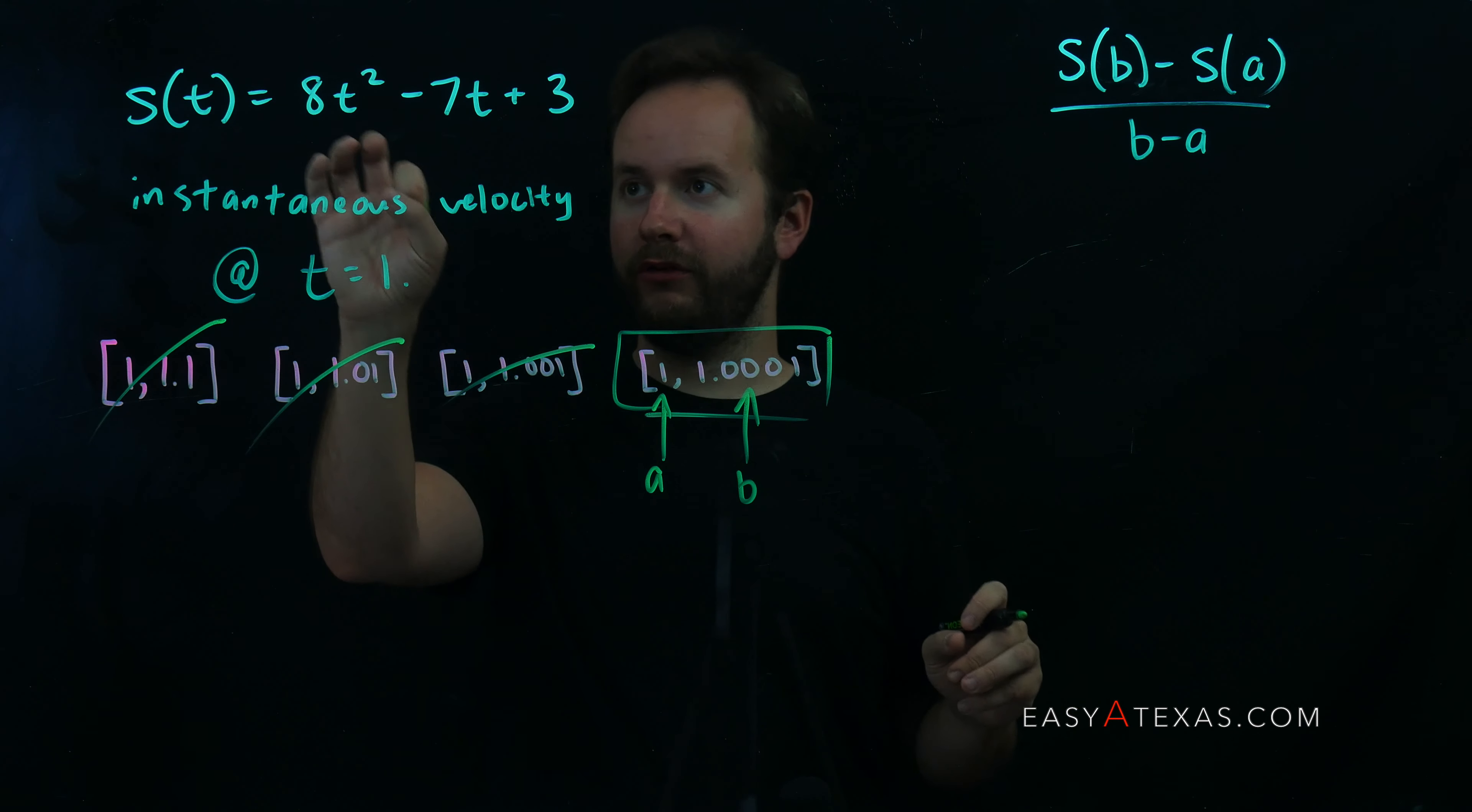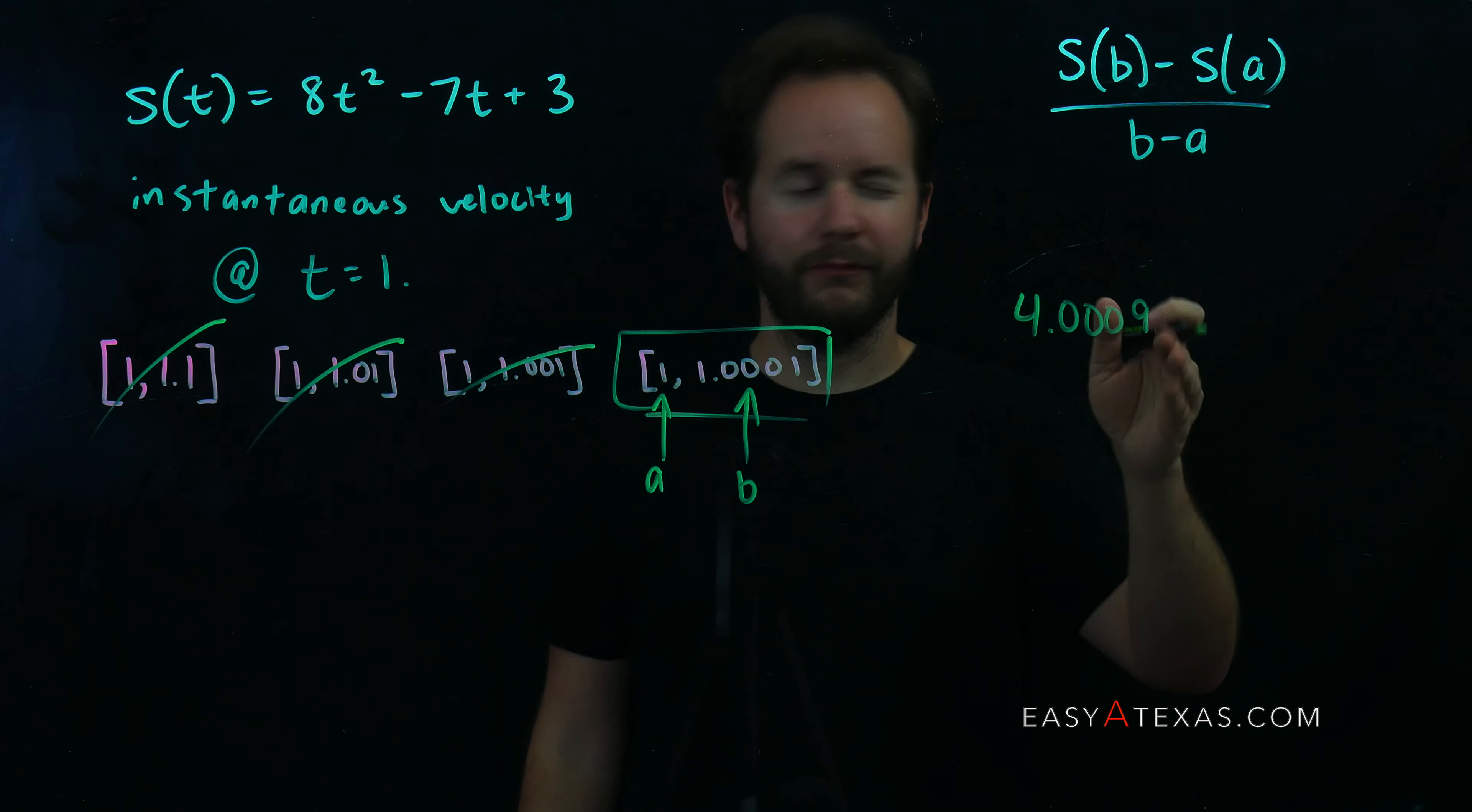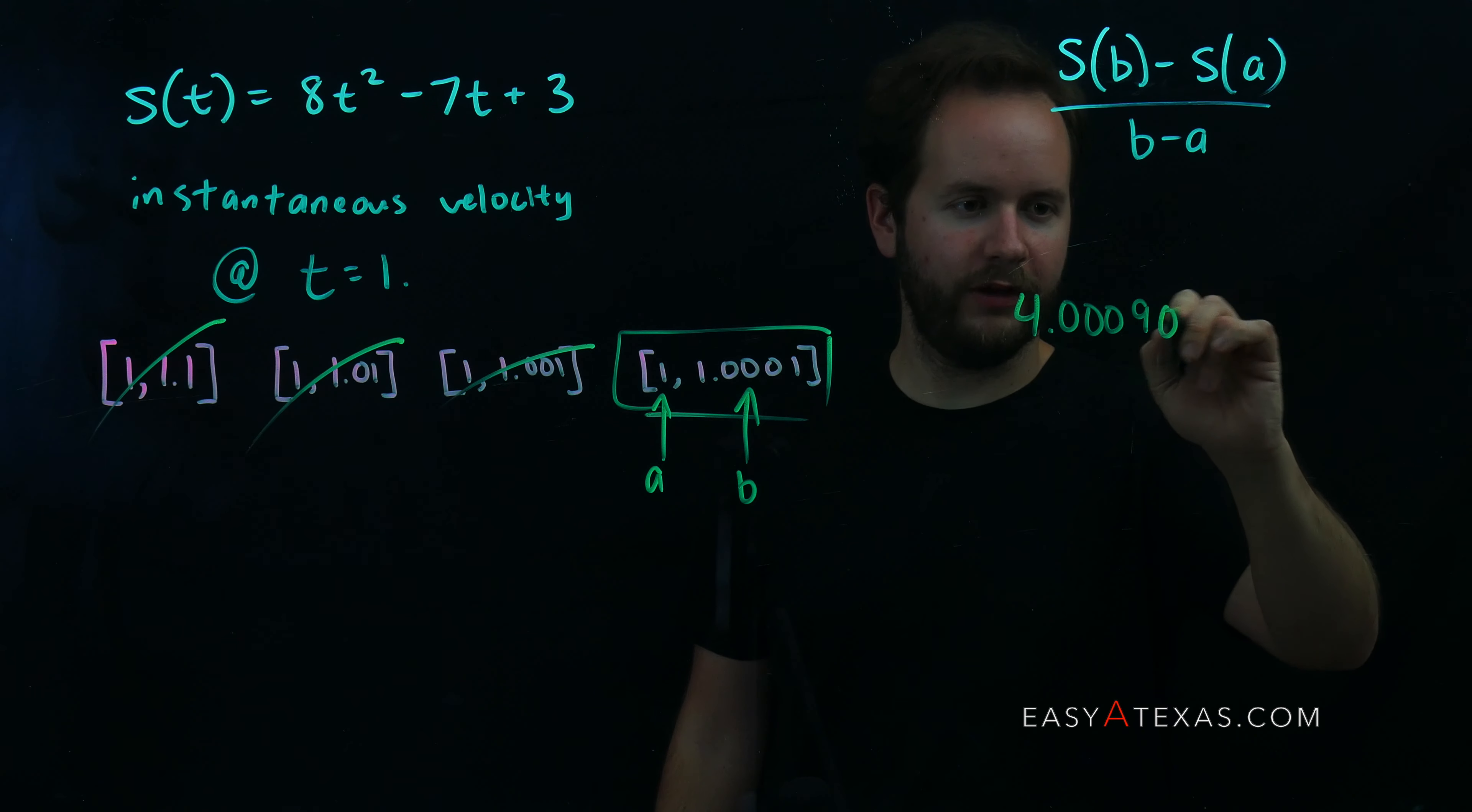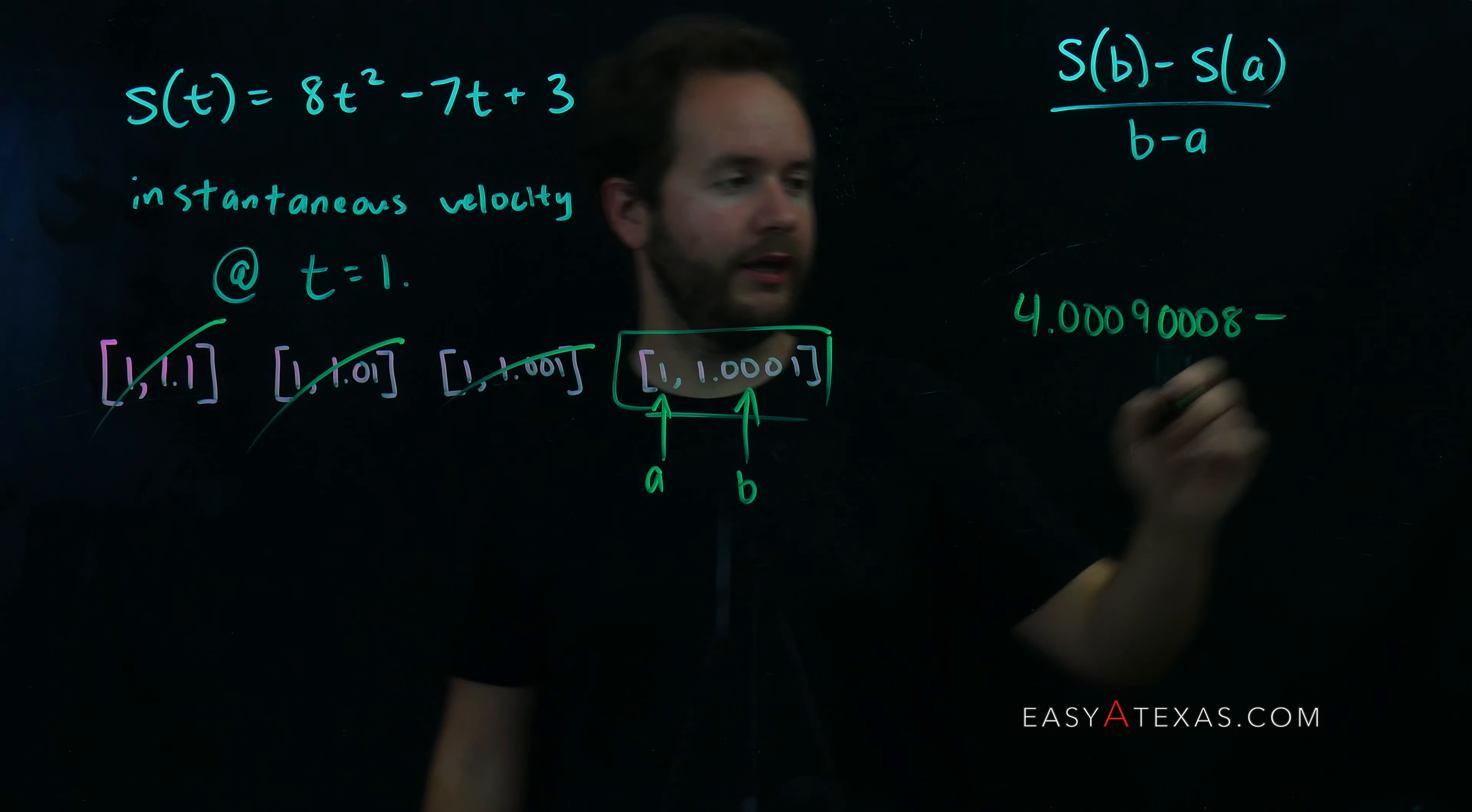When I do so, and I take 1.0001 and plug it in here, I get 4.00090008, but this is good enough. Let's actually go the whole way, 0008, I think, minus what I get when I plug in 1, and when I plug in 1, I get 4,